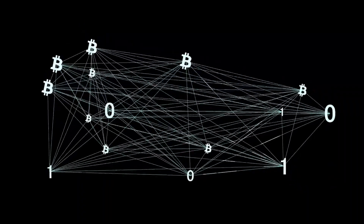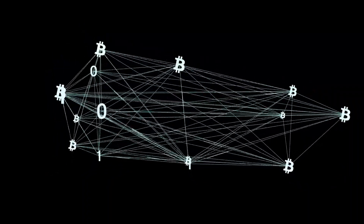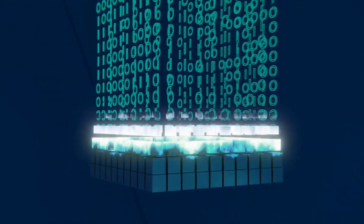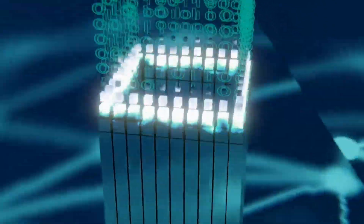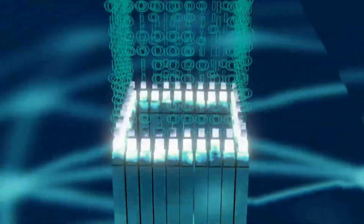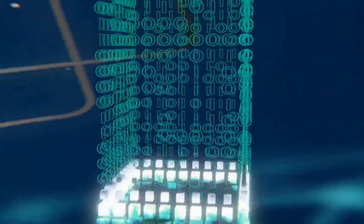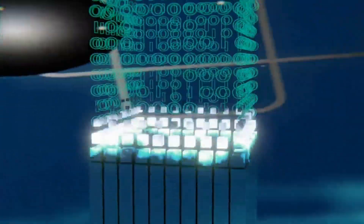The blockchain is nothing but a series of blocks. In every block you will store some information — that can be any type of data: transaction data, financial data, emails, or any data. We store any kind of information in the block.